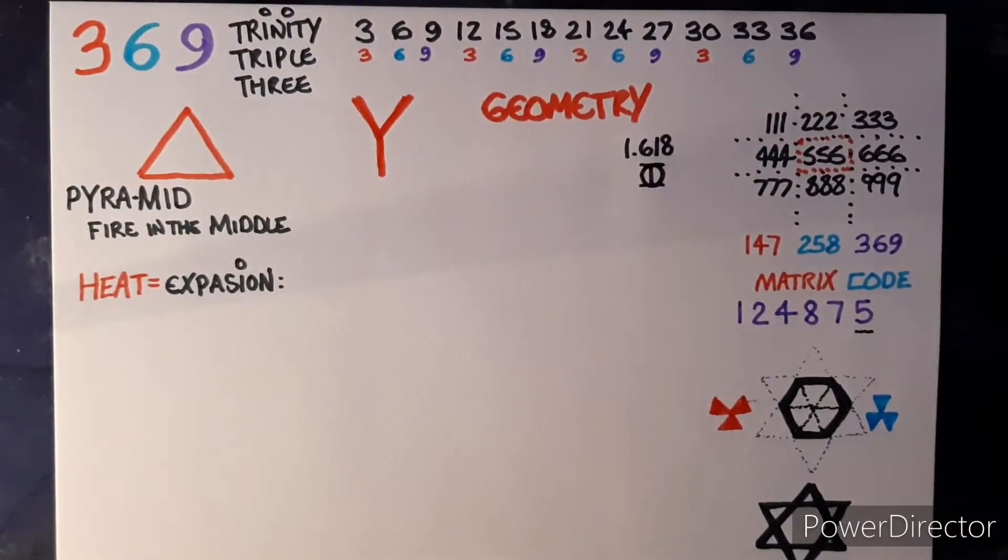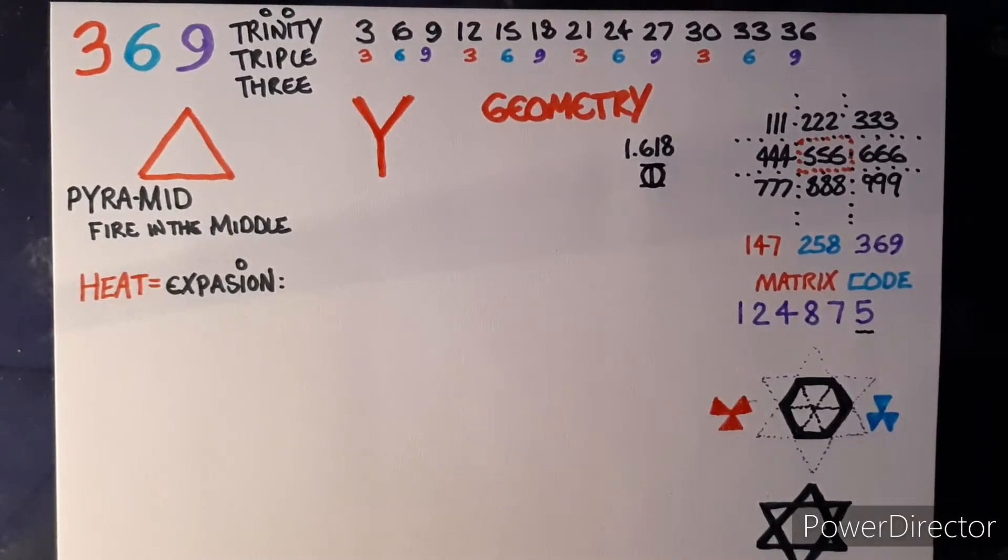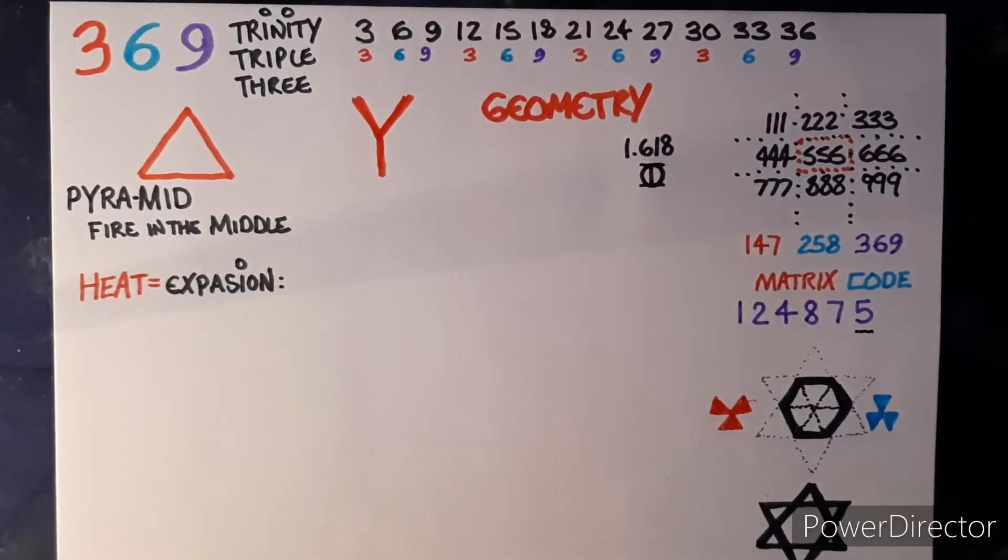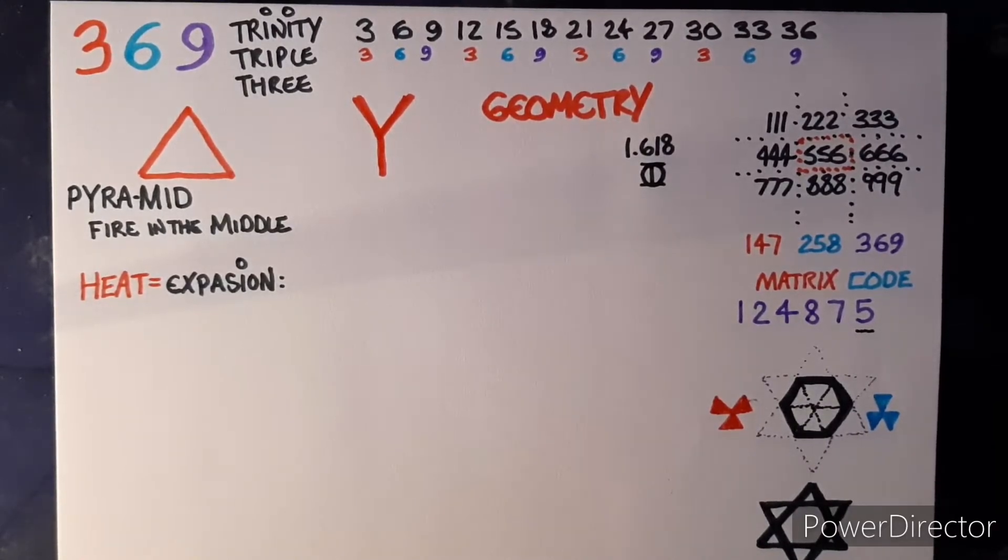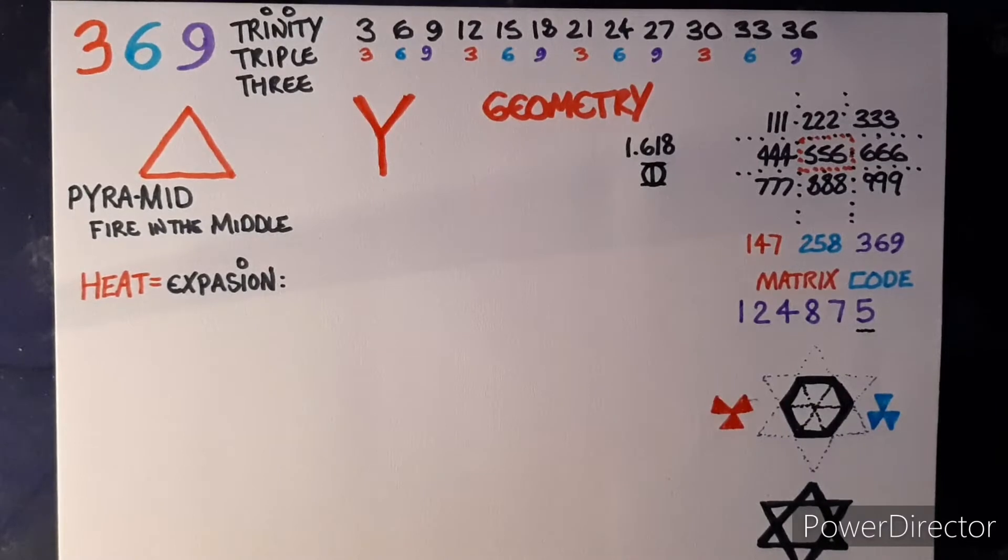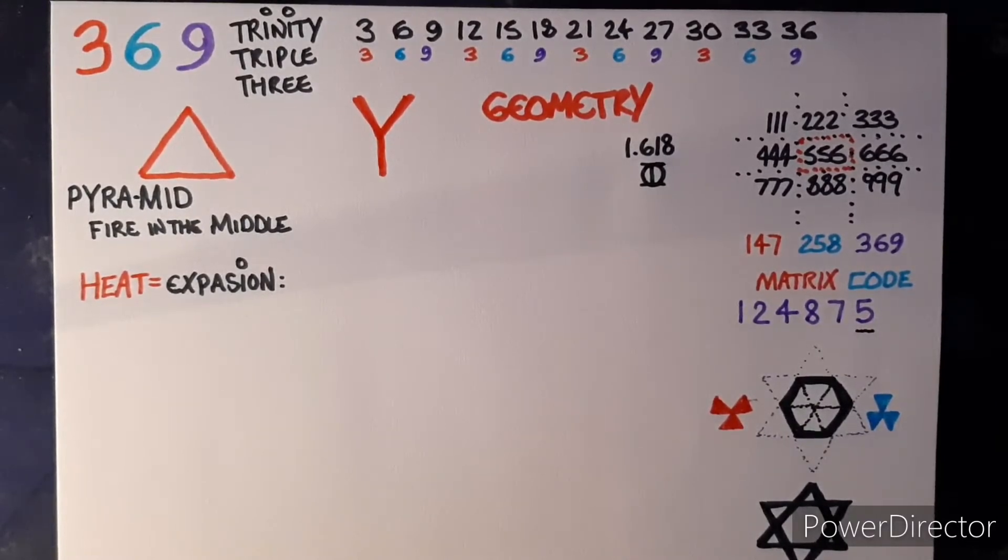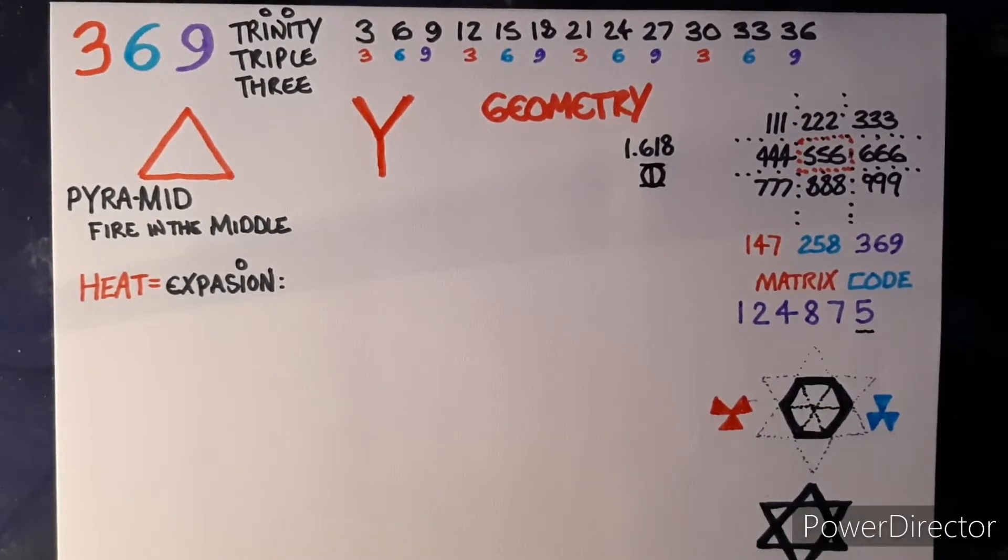Hey codes in the building. I want to look at the three six nine energy. We just had a three six nine day yesterday, but this is how I see the three, six, and nine as controlling this realm. It's a triple number system, so I see it in threes. I look for the trinity in all things.